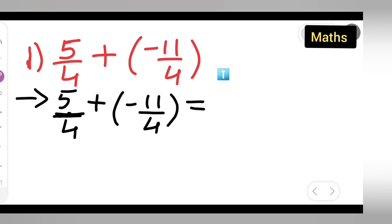(5 + (-11))/4. So we need to remove the brackets. Write down (5 - 11)/4.